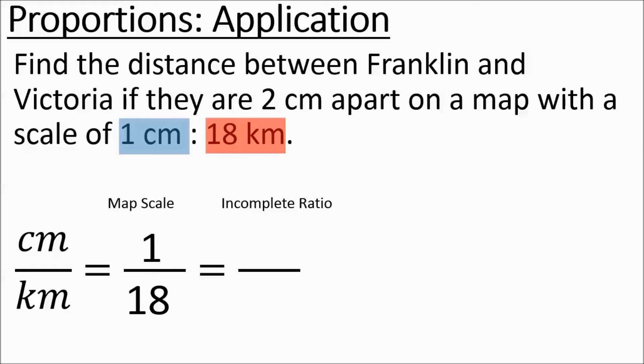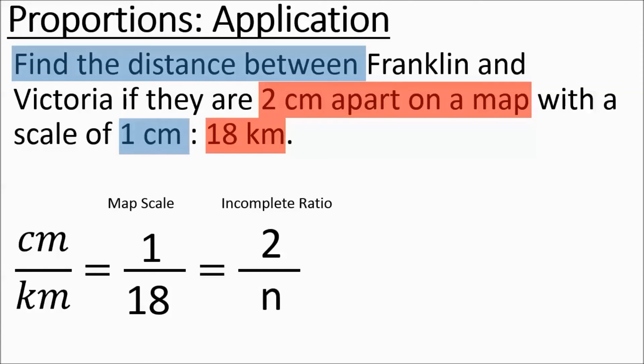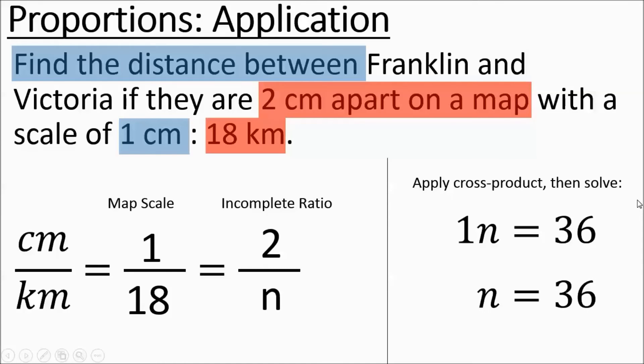And then they say that on the map, Franklin and Victoria are 2 centimeters apart. So we want to find the real distance in kilometers and that's our mystery number. Some of you might be able to do this automatically. I'm going to go ahead and do the cross products. We've got 1 times n equaling 18 times 2. 18 times 2 is 36. So n is 36. We didn't have to really worry about dividing anything out because this is identity property. 1n is the same thing as n. So in reality, 2 centimeters apart on a map represent 36 kilometers in real life.